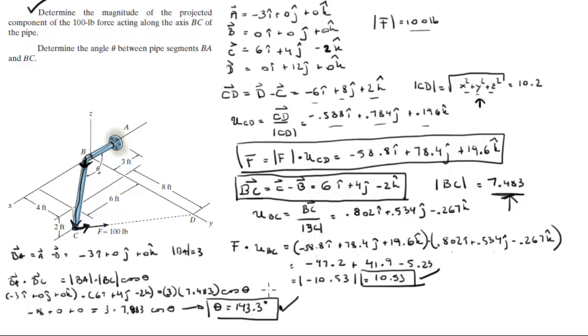That's the final answer for the angle between them — this angle right here — and the final answer for the projection of the force along BC is 10.53 pounds.